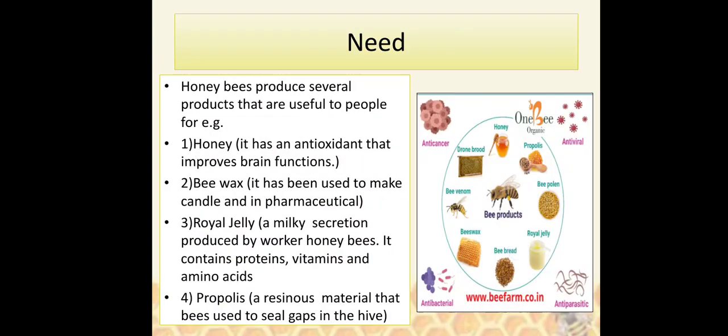Need of the activity: Honeybees produce several products that are useful to people. For example, honey has antioxidants that improve brain functions. Beeswax has been used to make candles and in pharmaceuticals. Royal jelly is a milky secretion produced by worker honeybees; it contains proteins, vitamins, and amino acids. Propolis is a resinous material that has been used to seal gaps in the hive.